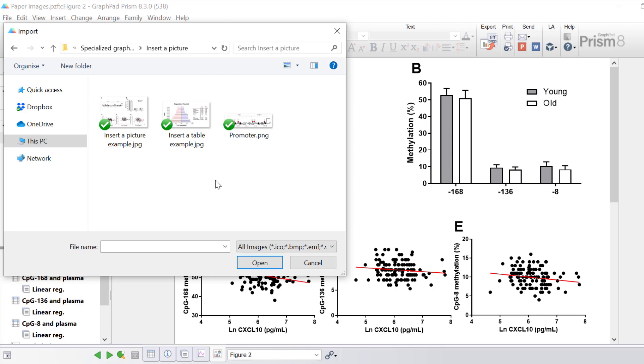If you are using Prism Mac you can import TIFF, BMP, JPEG, PCT or Macintosh PICT, PNG and PDF files.